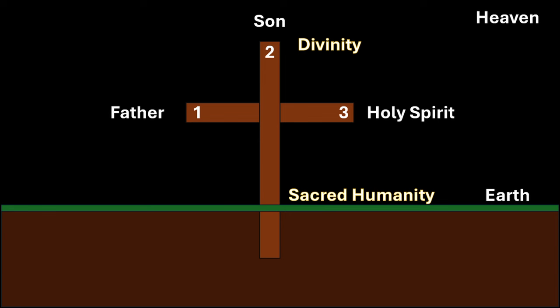Ephesians 1.10 says, "To unite all things in him" — that is, Christ — "things in heaven and things on earth." So the bottom of the cross symbolizes the sacred humanity of Christ, the top part of the branch signifies the divinity of Christ, and the middle of the branch signifies his personhood. Through the hypostatic union, the heights and the depths are united.